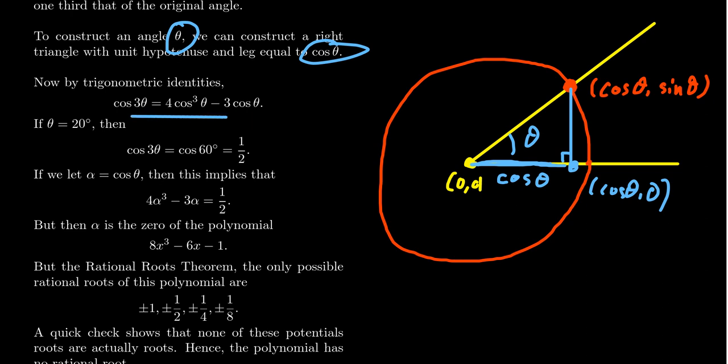And so then if you plug in the angle 20 degrees into this formula, then on the left-hand side, you're going to get 3 times 20, which is 60 degrees. This is one of those special angles we memorized in trigonometry class. Cosine of 60 degrees is equal to one half.